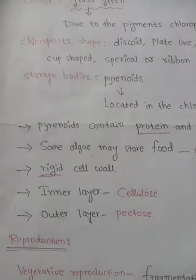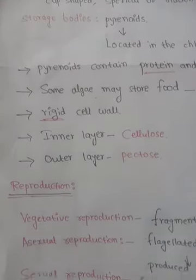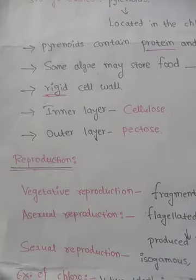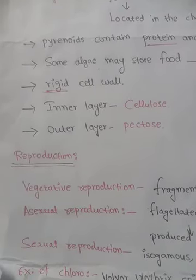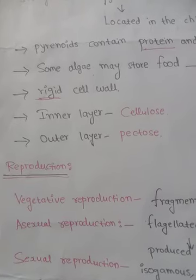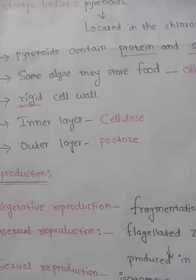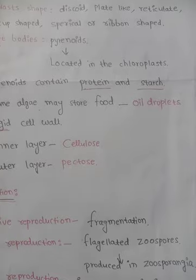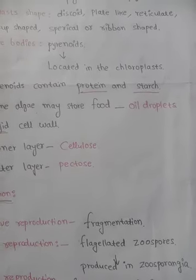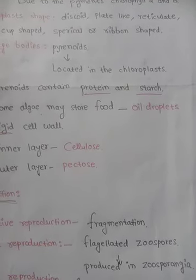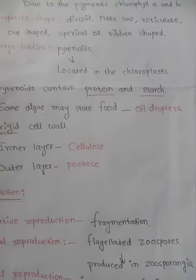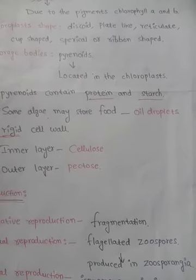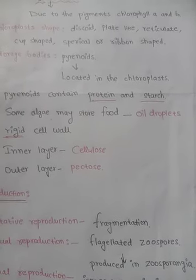Reproduction takes place by three methods in Chlorophyceae: first is vegetative reproduction, second is asexual reproduction, and third is sexual reproduction. Vegetative reproduction in Chlorophyceae takes place by fragmentation. If the plant body is cut or separated into parts, each portion has the capacity to give rise to a new plant. This type of reproduction is called fragmentation.